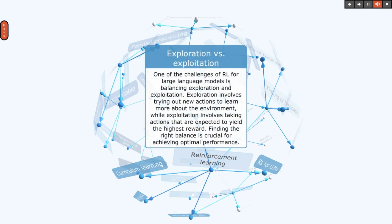One of the challenges of RL for large language models is balancing exploration and exploitation. Exploration involves trying out new actions to learn more about the environment, while exploitation involves taking actions that are expected to yield the highest reward. Finding the right balance is crucial for achieving optimal performance.